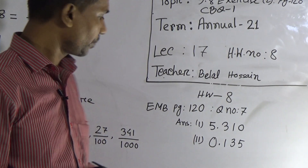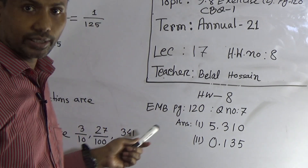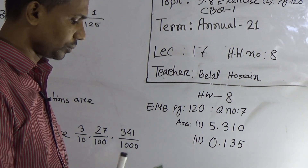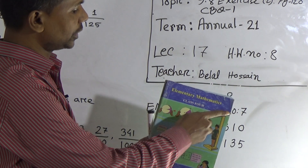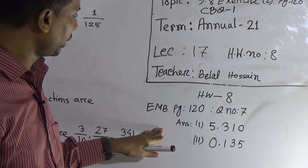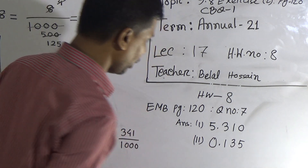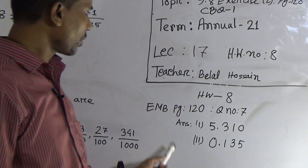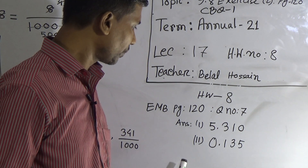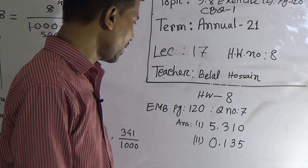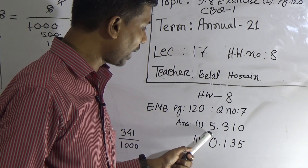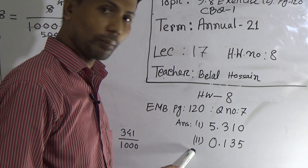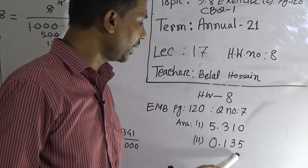Now I will tell you about the homework. HW: Elementary Mathematics Book, page 120, question number 7. There are two sub-numbers in question 7. For your understanding, I have written the answers: question 7, sub-number 1, answer will be 5.310, and sub-number 2, answer is 0.135.